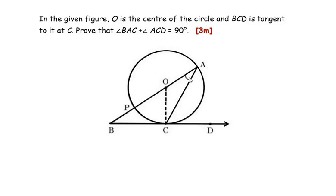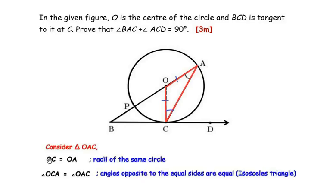Let us begin by considering the small triangle OAC inside the circle. In triangle OAC, side OA is equal to side OC because OA and OC are both radii of the same circle. Therefore angle OAC will be equal to angle OCA because angles opposite to the equal sides are equal, as this forms an isosceles triangle whose two sides are equal.